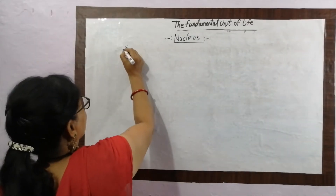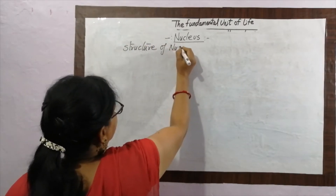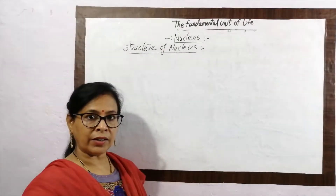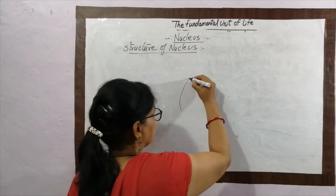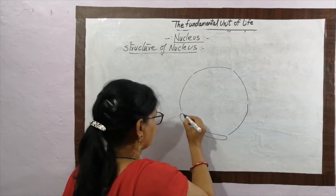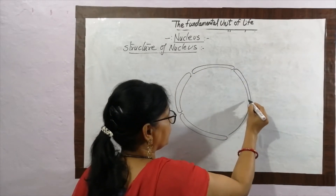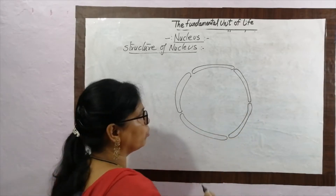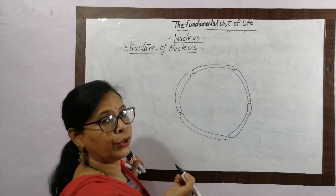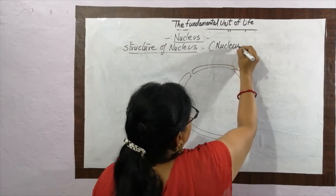Now, first is the structure of the nucleus. The nucleus is composed of five important parts. See the diagram of the nucleus. This is the nucleus of a eukaryotic organism. In this video, we are going to know about one more classification of organisms — that is on the basis of their nucleus.